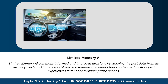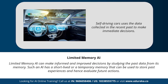Next we have limited memory AI. Limited memory AI can make informed and improved decisions by studying past data from its memory. Such AI has a short-lived or temporary memory that can be used to store past experiences and evaluate future actions. Self-driving cars are a prime example of limited memory AI — they use data collected in the recent past to make immediate decisions. For example, they use sensors to identify civilians crossing the road, detect steep roads or traffic signals, and use this information to make better driving decisions and prevent future accidents.